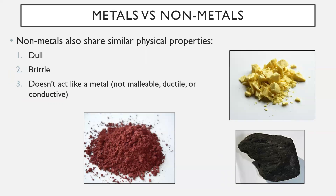Non-metals also share similar physical properties. They are dull — meaning not shiny. They are brittle, which means they can be broken into a powder or cracked into chunks. And they don't act like metals — they're not malleable, not ductile, and generally not conductive.